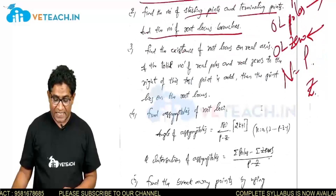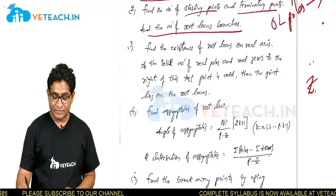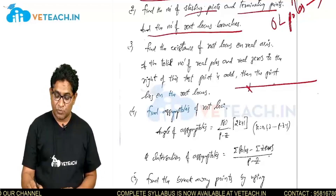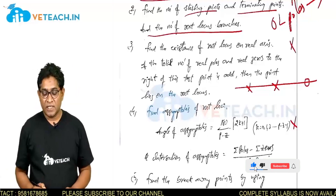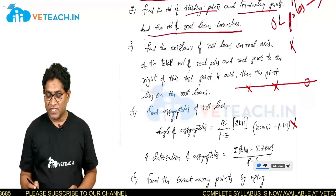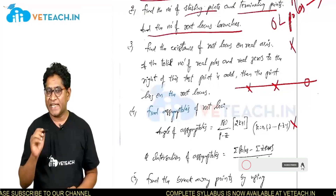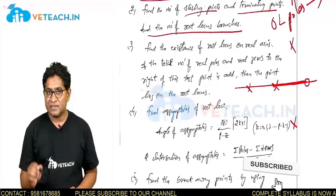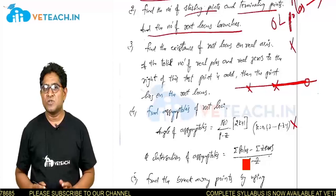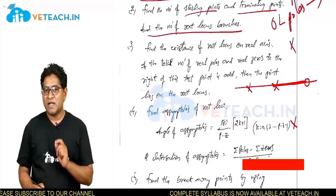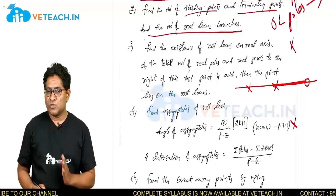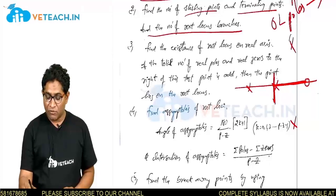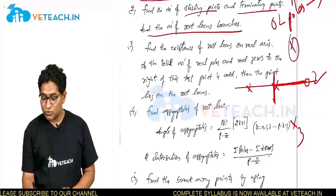Step 3: Find the existence of root locus on the real axis. The condition is: take any test point on the real axis, and to the right of that point the total number of poles and zeros must be an odd number. For example, if to the right of a section there are 3 poles and zeros (odd), root locus lies there. If there are 4 (even), root locus does not exist in that section.